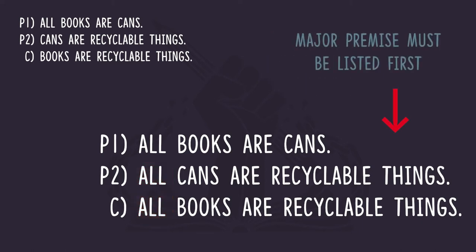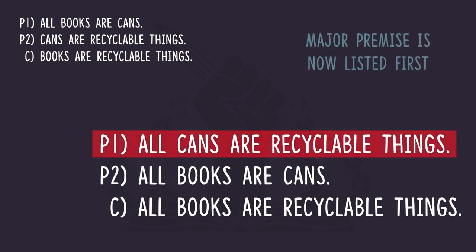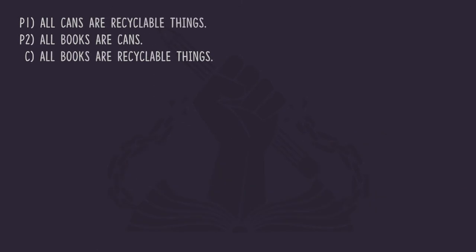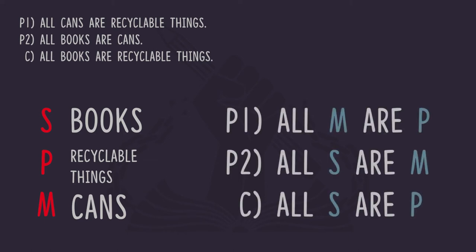The next thing we need to do is reorder the premises. In the original, the major term doesn't show up in premise one, so it's not the major premise — it's the minor premise; it has books in it. When we're done we get: premise one, all cans are recyclable things; premise two, all books are cans; and then the conclusion, all books are recyclable things. Now we write it in abstract standardized form using variables P, M, and S with a corresponding key. The argument becomes: premise one, all M are P; premise two, all S are M; and conclusion, all S are P. In our key: S equals books, P equals recyclable things, and M equals cans.